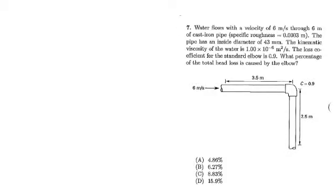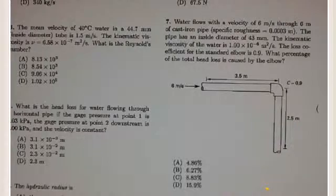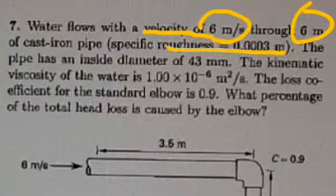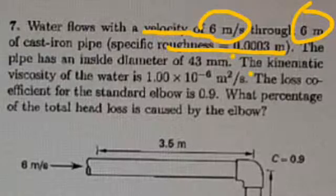I'd like to go through this problem together. We have water flowing with a velocity of six meters per second through this pipe, and the question is: what percentage of the total head loss is caused by the elbow? They tell you the velocity, the total pipe length is six meters, it's cast iron, they give you the specific roughness, the diameter, the kinematic viscosity of the water, and the loss coefficient for the standard elbow is 0.9.